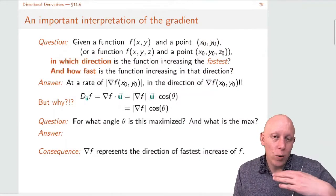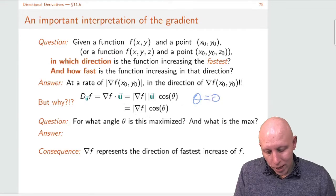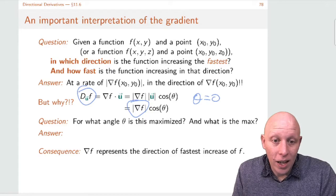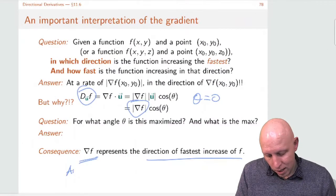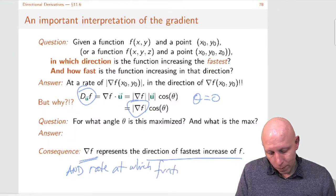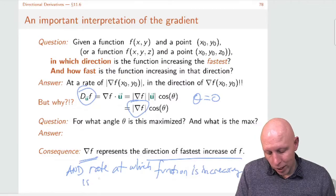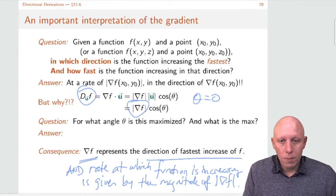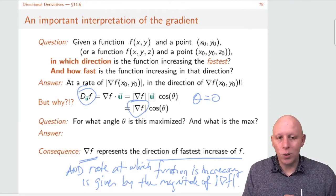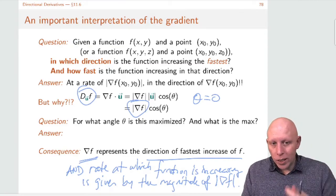So if we're going in the same direction as the gradient vector, that's how we increase our function value as fast as possible. We go in that direction. If theta is equal to zero, then what's the directional derivative? It's exactly the length of the gradient vector. So what this says is that the gradient is the direction of fastest increase, and the rate at which the function is increasing is given by the magnitude of the gradient vector. That's what the gradient is referring to — at any point, it's pointing in the direction the function is increasing the fastest.